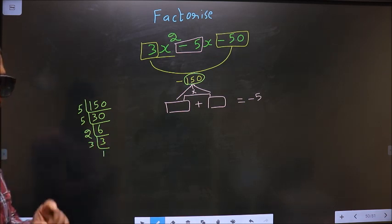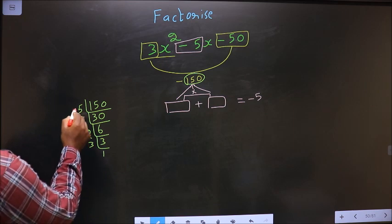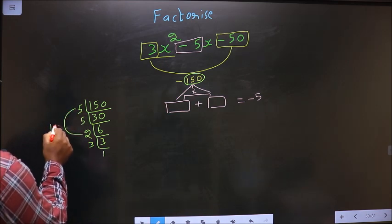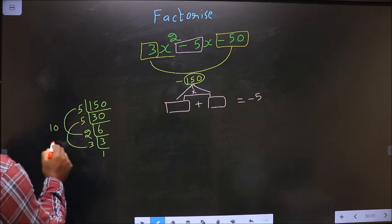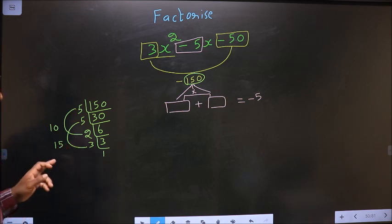So the 2 numbers are 5 × 2 = 10, and 5 × 3 = 15. Check: 15 - 10 = 5, and 15 × 10 = 150.